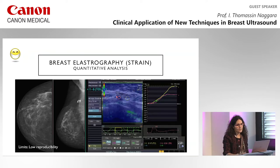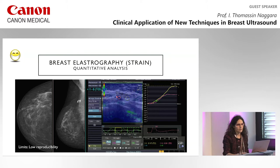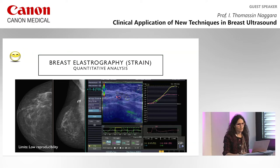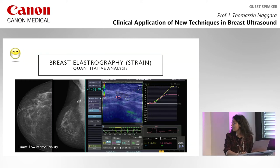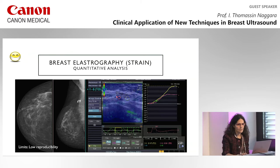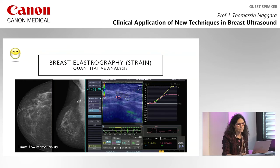Here is an example of strain elastography. I will show only one example because in our practice we do not use this technique so much — the main limit is lack of reproducibility. Here you have an example of quantitative analysis: malignancy is suggested when the ratio is higher than 4, comparing deformability between the lesion and the adjacent normal parenchyma, as in this example.